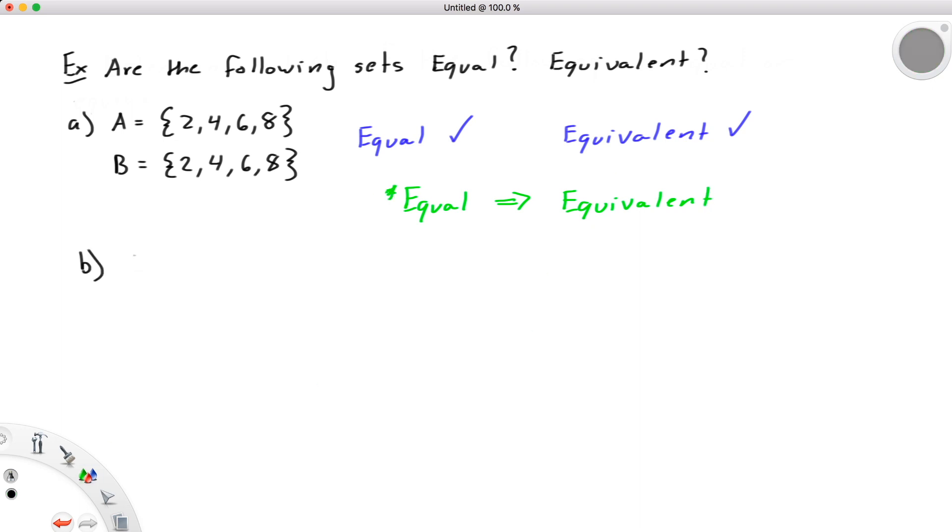We could similarly examine {2, 4, 6, 8} and {2, 6, 4, 8}. These two sets are also equal. It's important to recognize here that the order the elements are listed doesn't actually matter. It's the content of each set that counts.